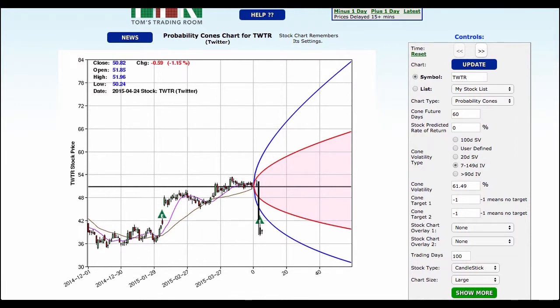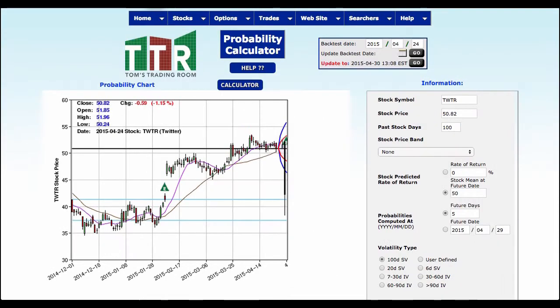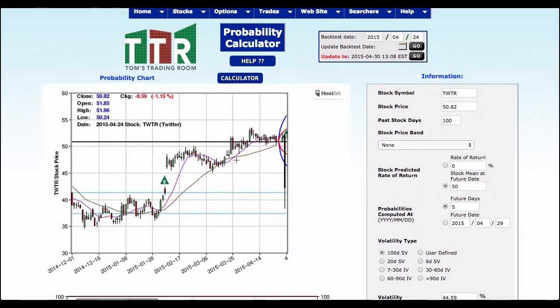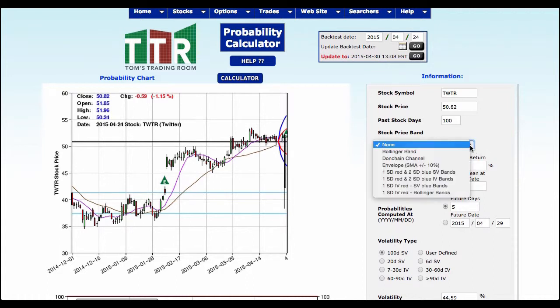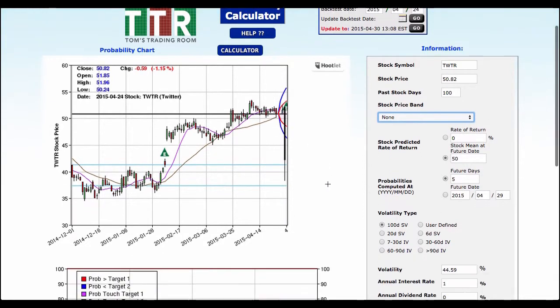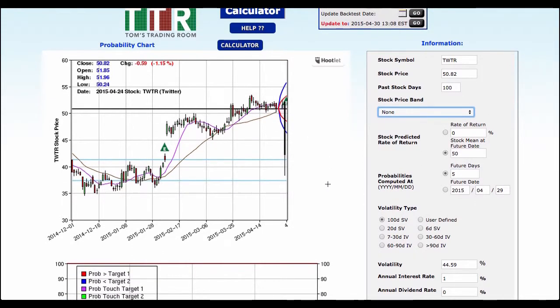The next place I want to take you to is, if you go to stocks and you go to charts, go all the way down to probability charts, and you're going to see something that looks similar. However, we have a probability calculator, which you can actually manually put information in. So now I'm looking at Twitter once again, and I'm looking at the 24th. I back the date up to last Friday, the 24th of April. I've got a stock price, and then I've got bands. I can put bands in here if I want to, but I'm going to leave that alone, because we've got the probability chart already in place.